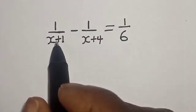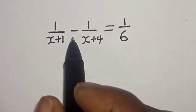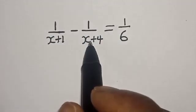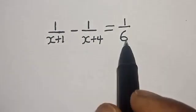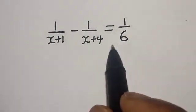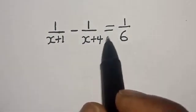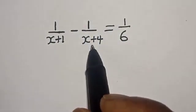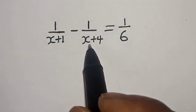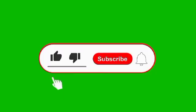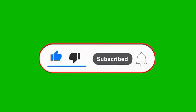1 divided by x plus 1, minus 1 divided by x plus 4, is equal to 1 divided by x plus 6. Hi everyone, welcome to my class. In this class, we quickly want to find the value of x from this given algebra equation. Please don't forget to like, share, comment, and subscribe.